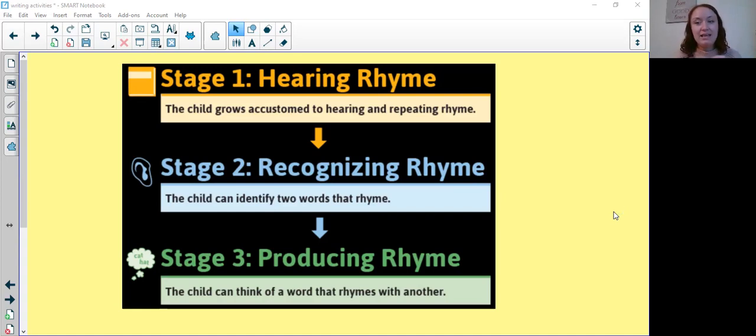Can they identify that cat and mat rhyme? Some children need it slower, some children need it faster - cat, mat - and they need that kind of punchy rhythm to it in order to identify it. Some children need to just hear it really slowly in order to identify it. I know before lockdown we had a really large chunk of the children in the class working at this stage two.